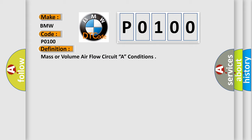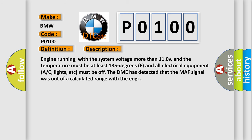And now this is a short description of this DTC code. Engine running with the system voltage more than 11.0 V, and the temperature must be at least 185 degrees F, and all electrical equipment like AC, lights, etc. must be off. The DME has detected that the MAF signal was out of a calculated range with the engine.